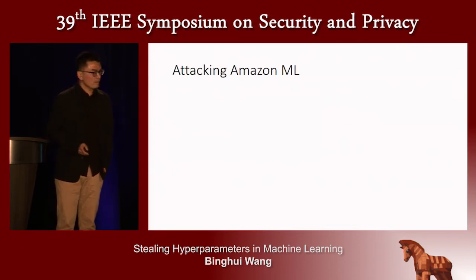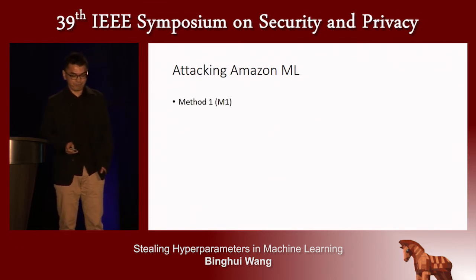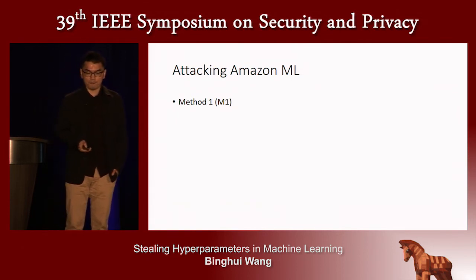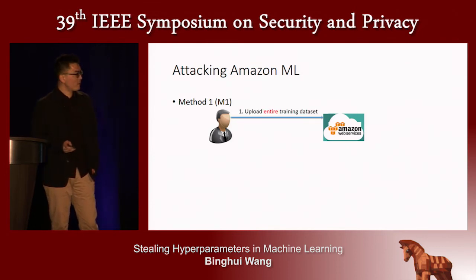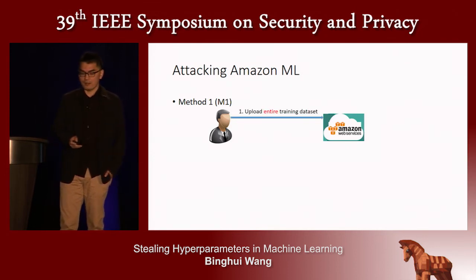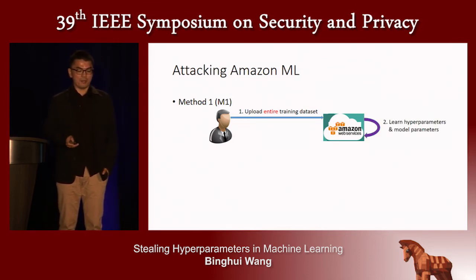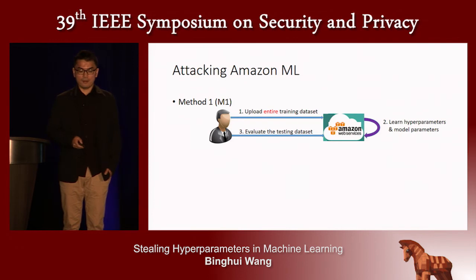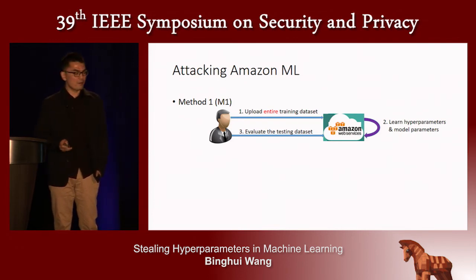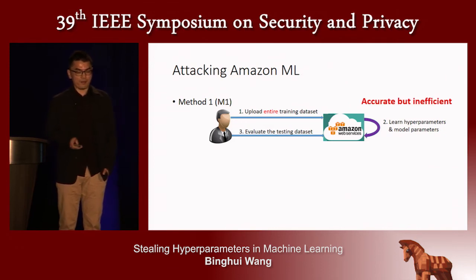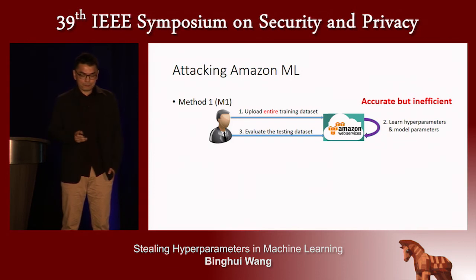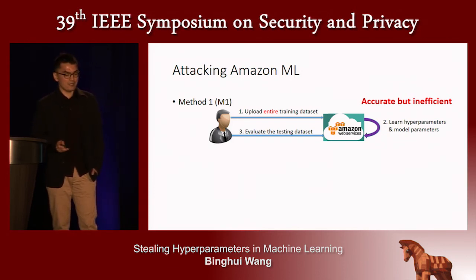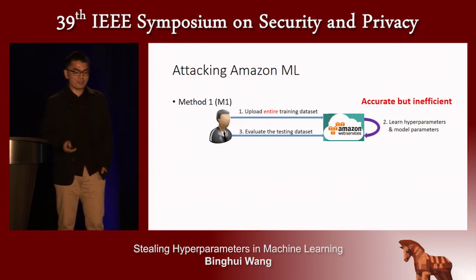We evaluate our attack on a real machine learning as a service: Amazon Machine Learning. We consider two methods that users employ. In Method 1, the user uploads the entire training dataset to Amazon Machine Learning, which uses the entire dataset to learn both hyperparameters and model parameters. The user then evaluates the test data by querying the learned model. This method is accurate but inefficient, because using the entire training dataset to learn hyperparameters is computationally expensive.